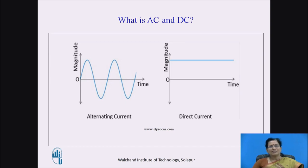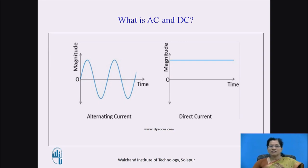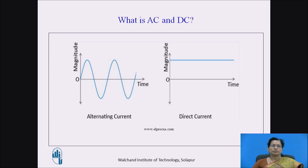In this slide, you can see the alternating current — the graph is between magnitude and time. The magnitude changes with respect to time. But in another diagram, you can see the magnitude remains constant with respect to time. That is called direct current. At any instant, the magnitude is constant. That is the difference between AC and DC.